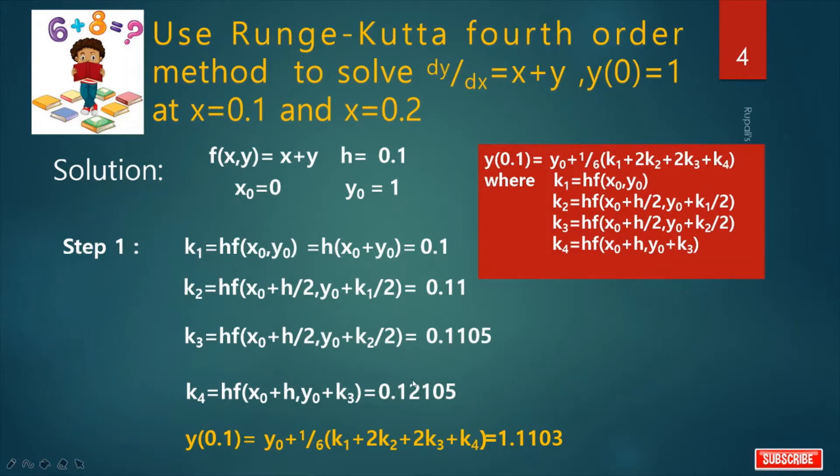After calculation we get the value of y(0.1), it is 1.1103 by this formula. Y(0.1) equals y0 plus 1/6 into (K1 plus 2K2 plus 2K3 plus K4), and we already calculated the value of K1, K2, K3, and K4. We get the result. This is the value of y(0.1).